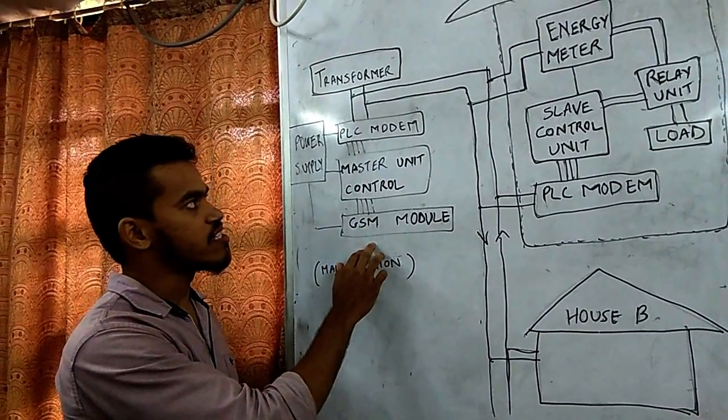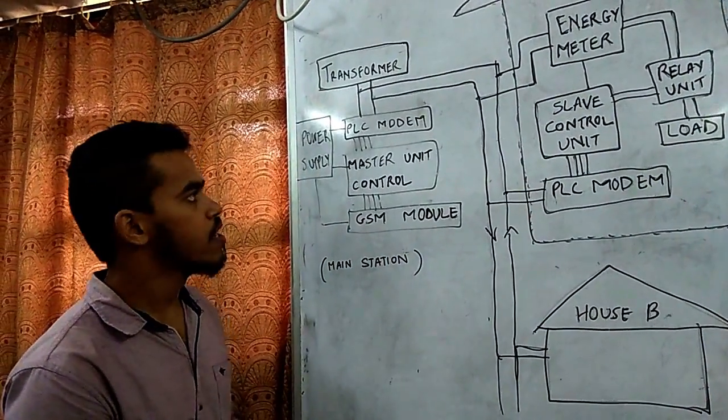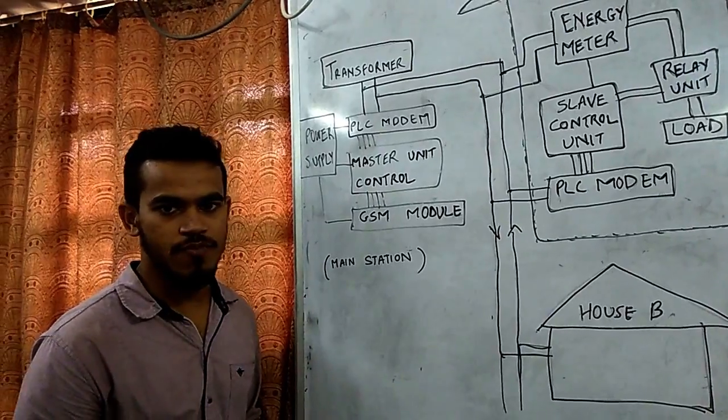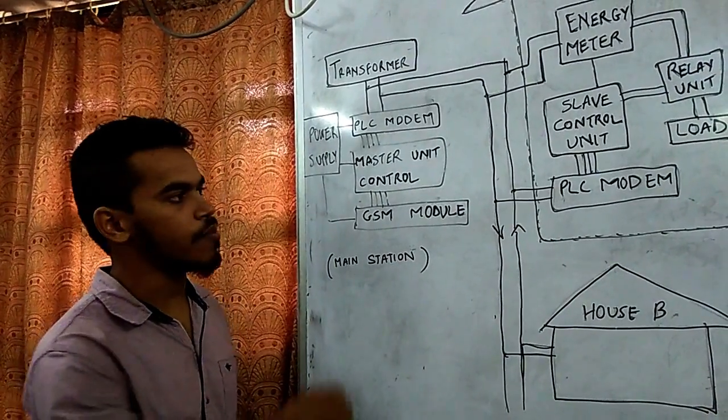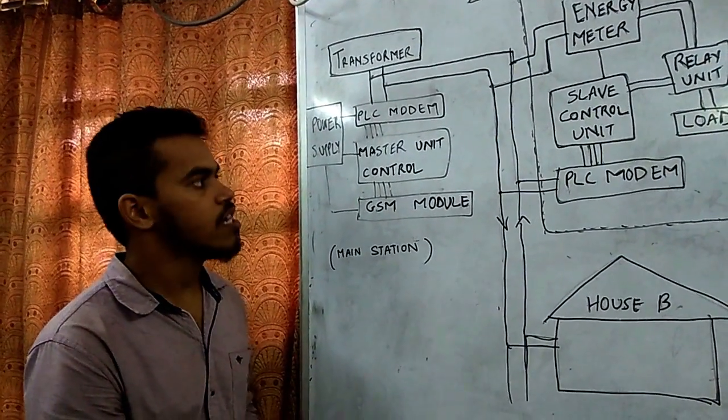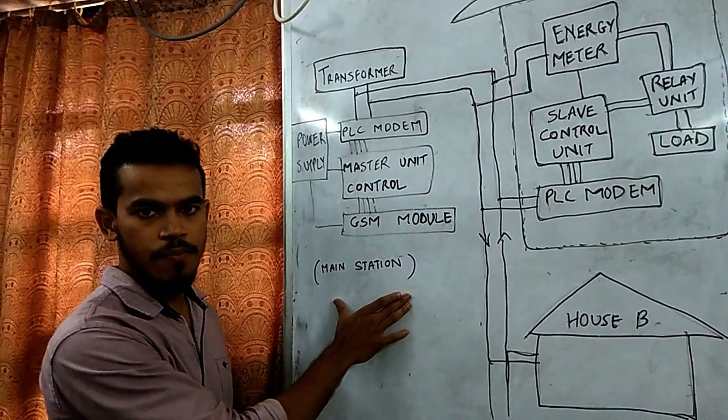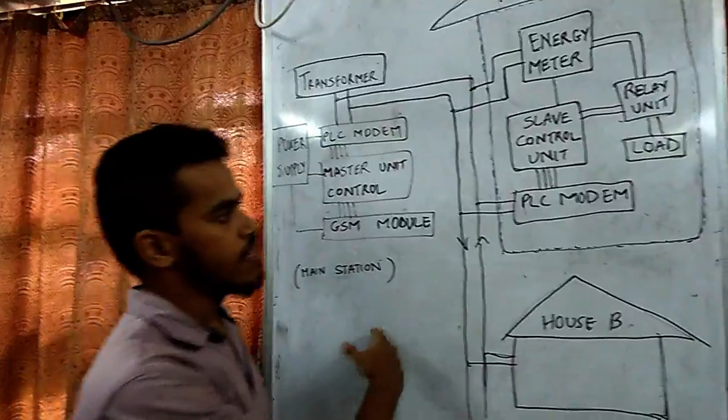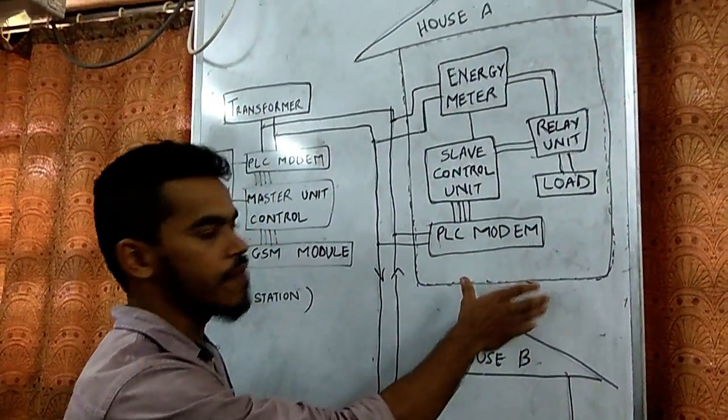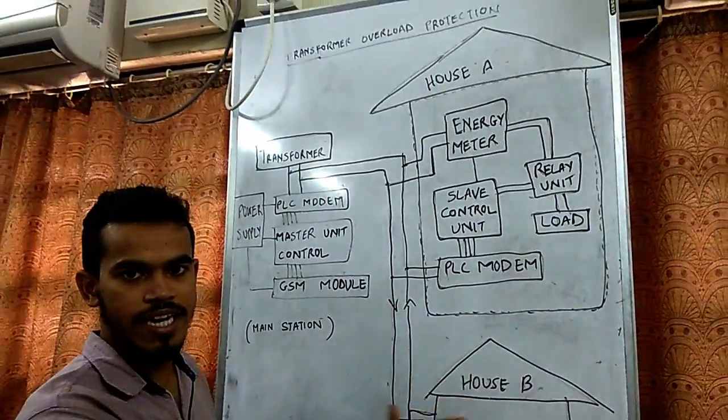The controller is interfaced with GSM module and PLC modem. PLC modem is a powerline communication modem which is used to communicate with slave devices using transmission line. This unit will be acting as a master unit, and at each house there will be another circuitry which will be acting as a slave unit.